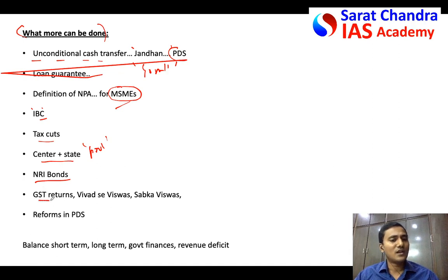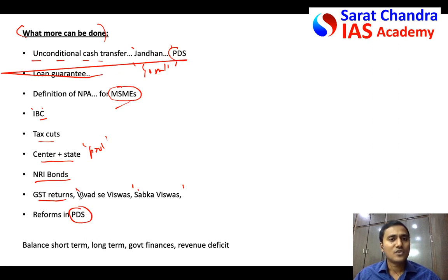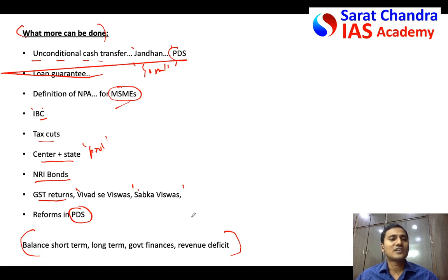The time limit for filing GST returns for corporates has been extended to June 30th and should be extended further, since even in September COVID-19 pressure has not been relieved. Schemes like Vivad Se Vishwas for filing GST and income tax returns should also be further delayed. PDS reforms should be brought in to provide basic necessities to those facing cash crunch. In the conclusion, note that while the government is following all these measures, short-term steps should not negatively impact the long-term economy — the revenue deficit and fiscal deficit must also be managed.